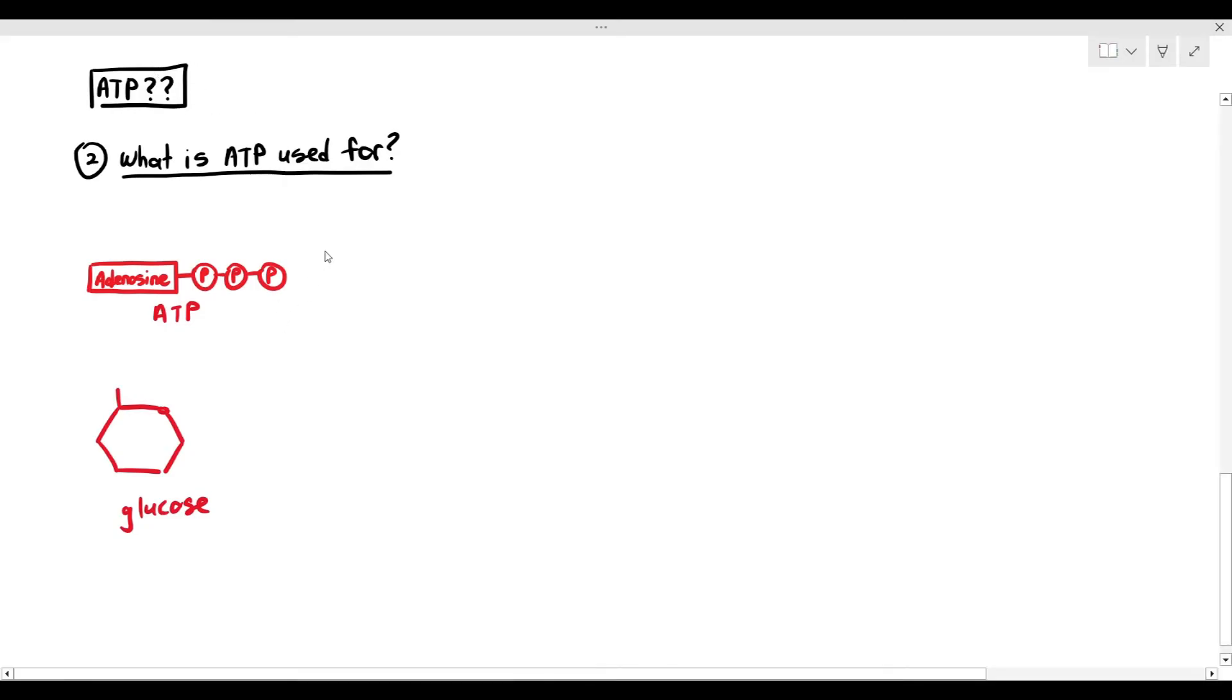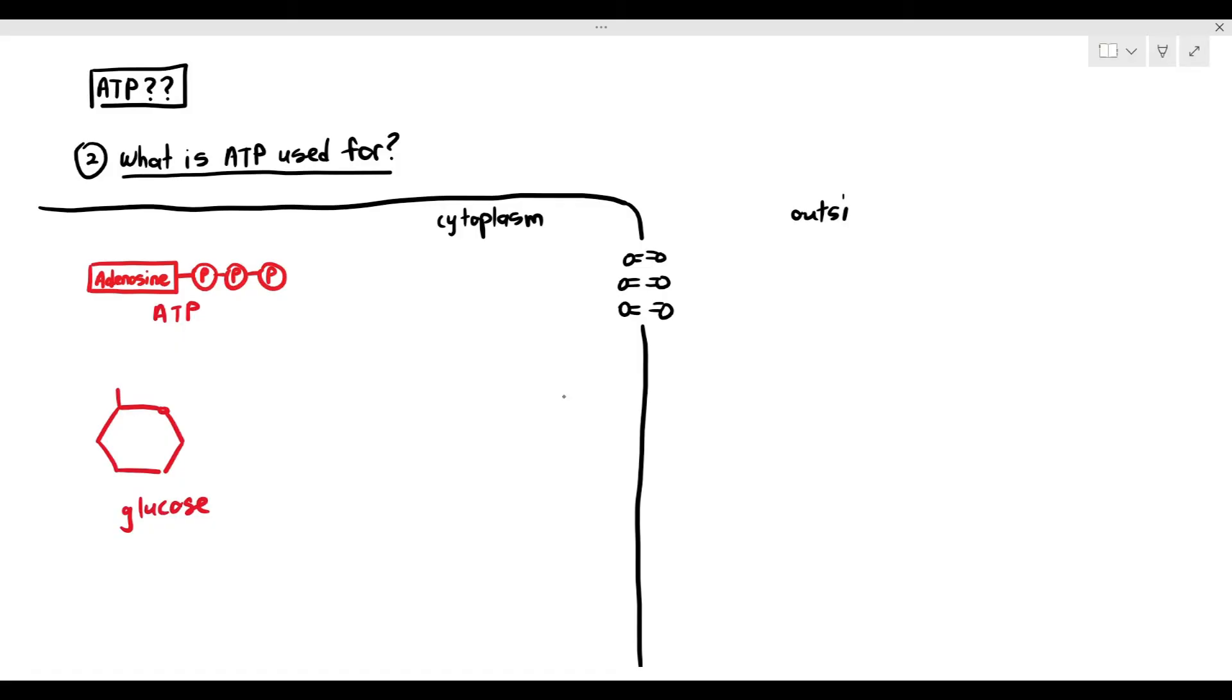There is a relationship between glucose and ATP. So let's just compare two of these molecules: ATP and glucose. Both are chemicals, and both contain chemical energy. Now these ATP and glucose molecules are inside the cell, represented in the cytoplasm. And you can see the cell surface membrane, the phospholipid bilayer over there.